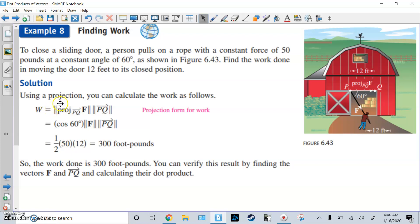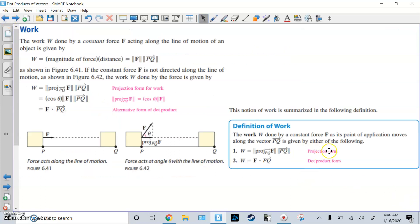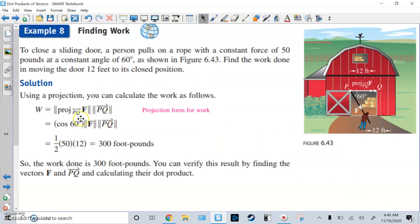All right. So we're going to use this projection. So we're going to use this formula. The work done is the projection of F on the PQ using the projection form. So notice it's cosine of 60 degrees times F. We know F is 50. Cosine of 60 is 1 half. And then PQ, P to Q is 12. Multiply that, get 300 foot-pounds. So here, 300 foot-pounds is the answer. And we can verify if we want by multiplying the vectors F and PQ and calculating their dot product.